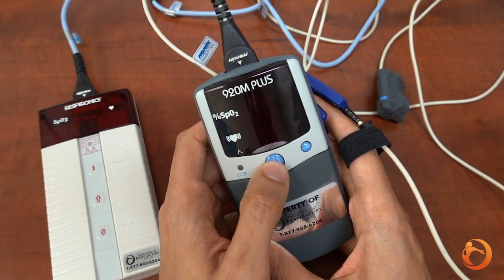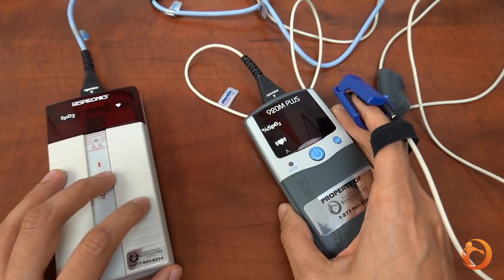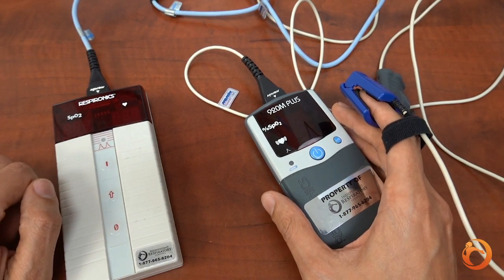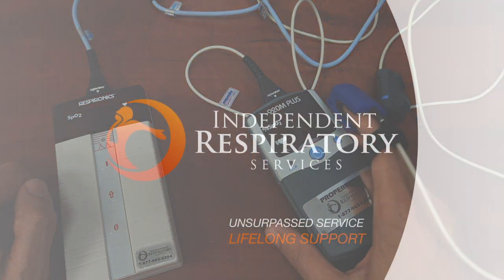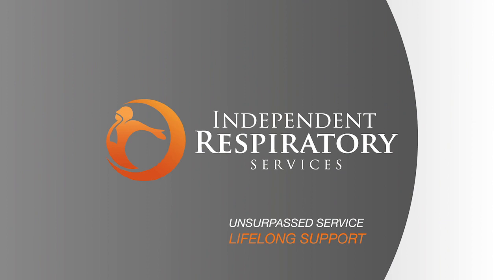The test is usually done for two nights. Place the oximeter in the bag and arrange to return it back to your office as agreed. Independent Respiratory Services will send the report to your referring specialist, physician or other healthcare practitioners. For any questions, please contact your local Independent Respiratory Services office.